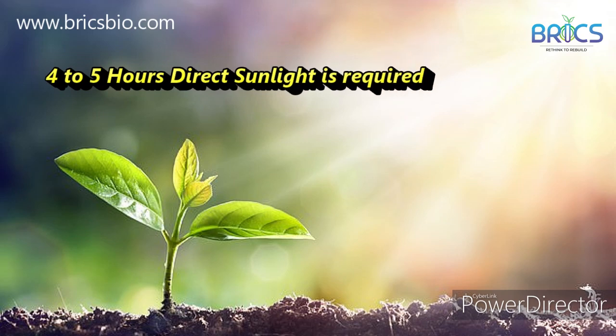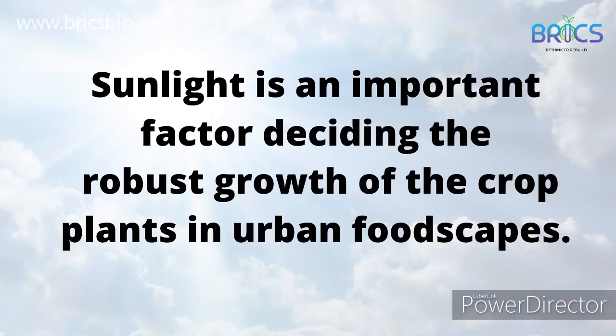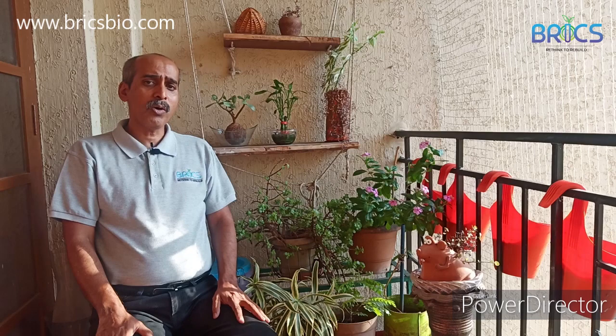Especially 4 to 5 hours of direct sunlight is a must if your expectation is fruit, flower, roots, tubers, or underground parts. For crops like tomato, chili, brinjal, capsicum, carrot, and radish — all crops where the expectation is fruit or tubers — you need to provide very good light.